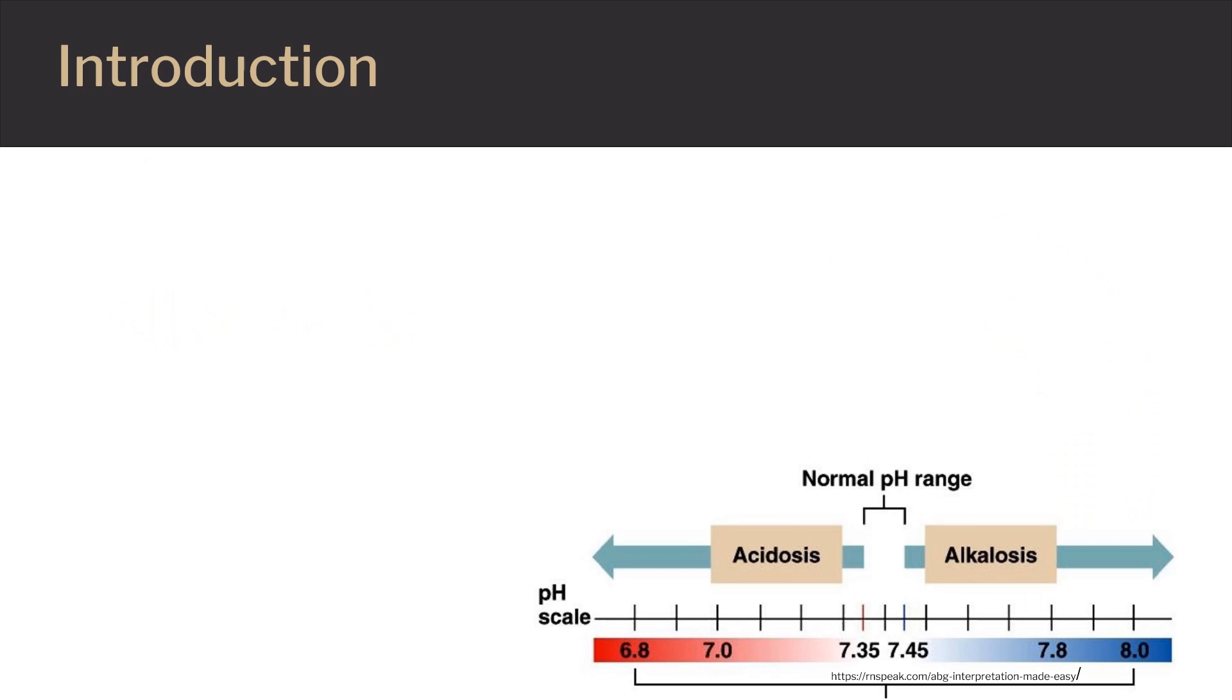Alkalosis occurs when your body has too many bases. It can occur due to decreased blood levels of carbon dioxide, which is an acid, or increased blood levels of bicarbonate, which is a base. This condition may also be related to other underlying health issues, such as low potassium or hypokalemia. The earlier it's detected and treated, the better the outcome is.